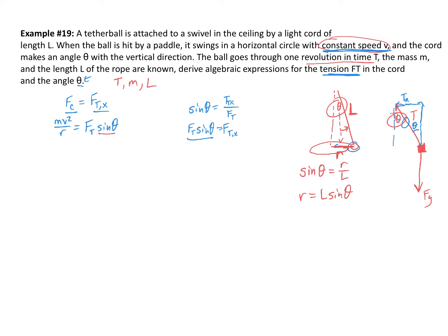I can substitute L sine(theta) in for r in my original equation. So I have mv² over L sine(theta) equals F_T sine(theta). Don't get too excited — the sine thetas aren't going to cancel because one is on the bottom and one is on the top. If I move it over, it'll give me sine squared of theta because I need to multiply by sine theta.